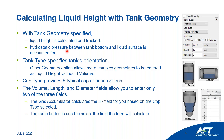The tank type dropdown specifies tank orientation, which you can see here. You can specify a vertical tank, a horizontal tank, or in that dropdown you can specify other geometry, which allows you to model more complex geometries using a liquid height versus liquid volume grid.